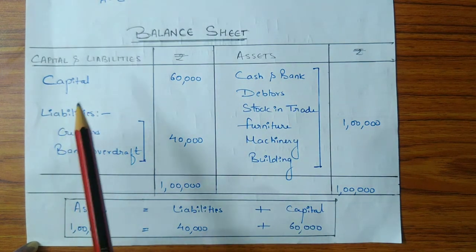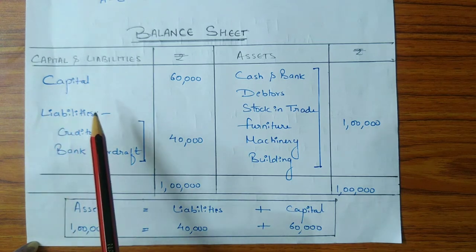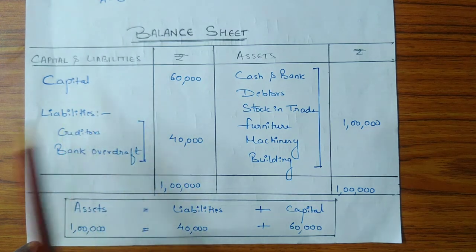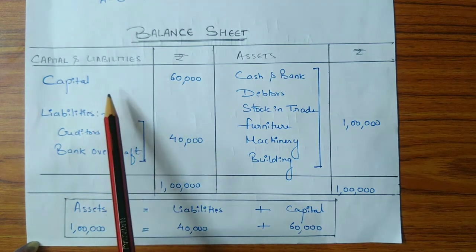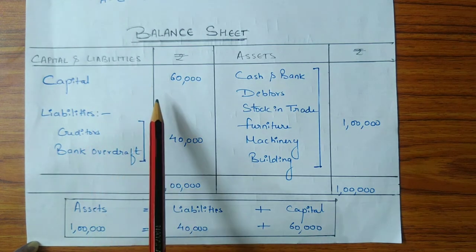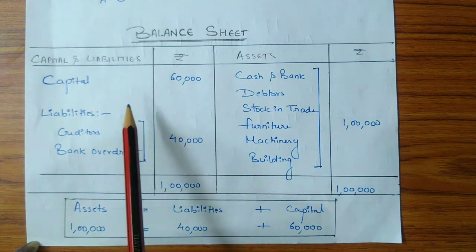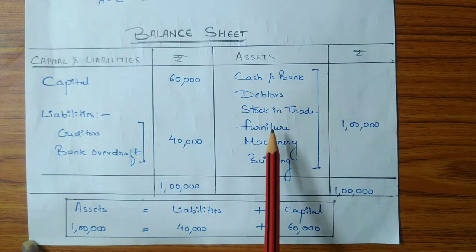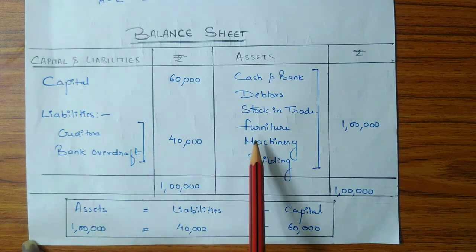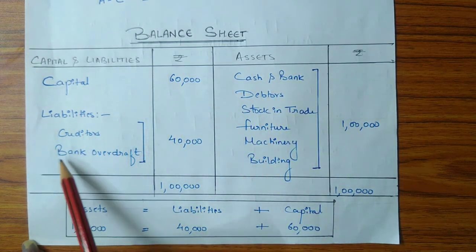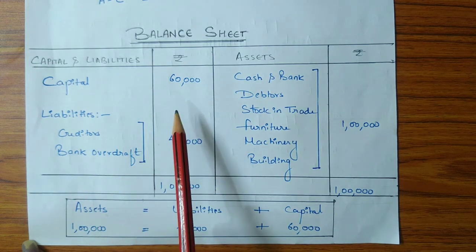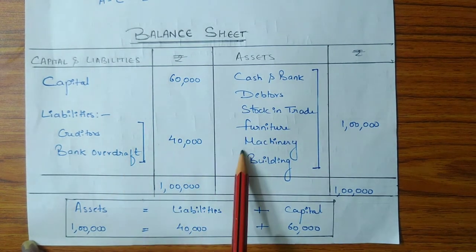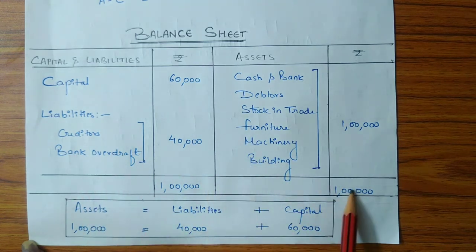Capital is the amount invested by the proprietor in the business — the amount with which the business starts. Liabilities means funds borrowed by the business from outsiders. In the balance sheet, both the assets side and the liabilities side are always equal, because the assets of a business are purchased either from capital supplied by the proprietor or from funds provided by external parties.